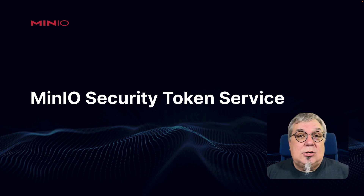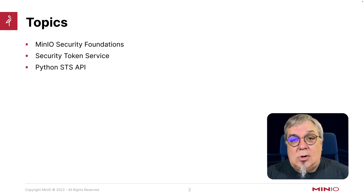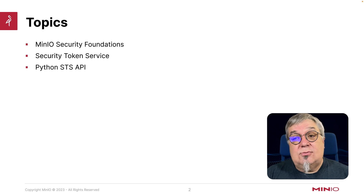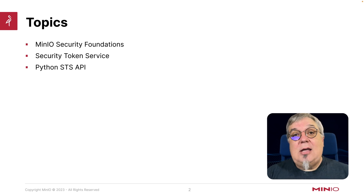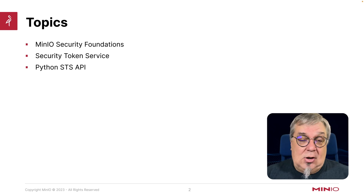What we're going to be talking about today is the MinIO Security Foundations, for those of you who haven't seen our Security IAM videos. I'm also going to talk a little bit about what a security token service is for, and then I'm going to get into the Python STS API, and we're going to see some examples in the next video.